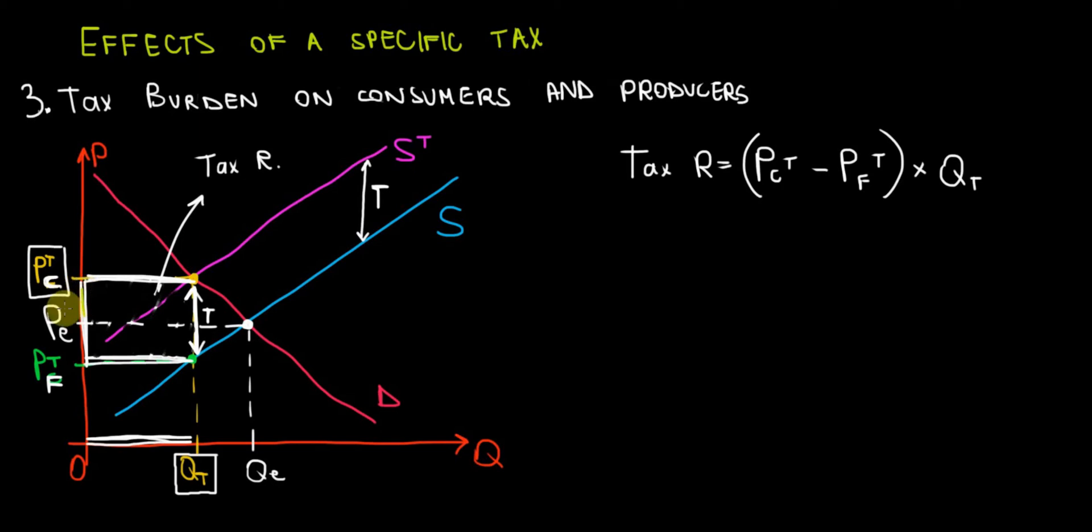Okay, this difference over here, which is the difference between the price of the equilibrium before the tax and the price the consumers have to pay after the tax, multiplied by the quantity that's being taxed on the market, which is QT. This rectangle over here that I'm shading right now is going to be the tax burden on consumers. I'm going to write it like that: tax burden for the consumers.